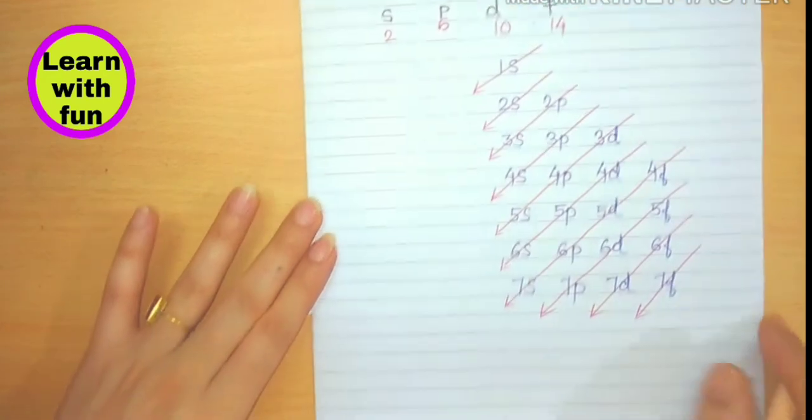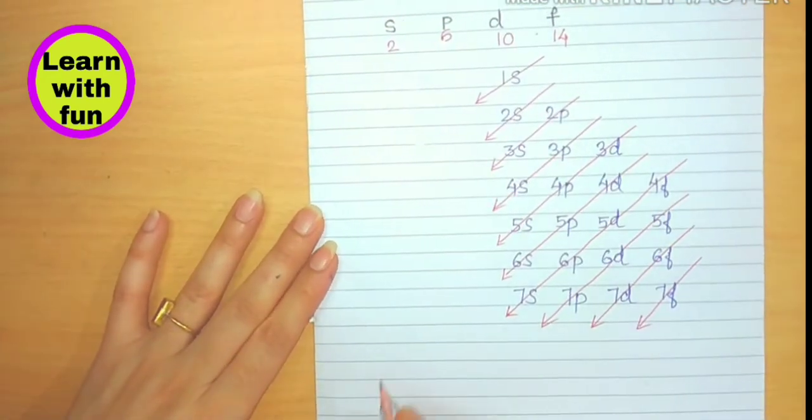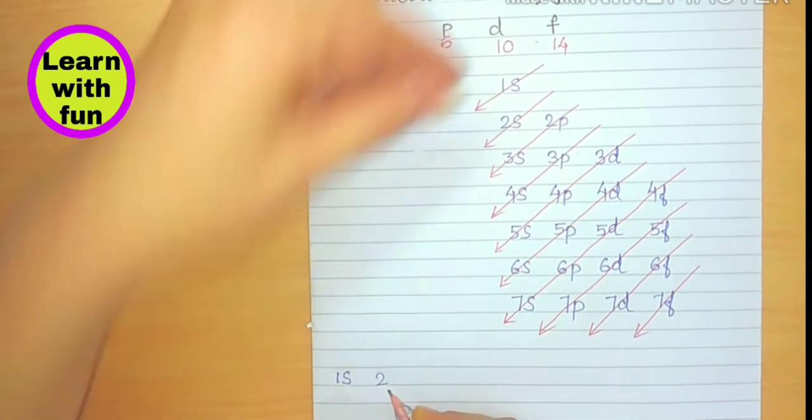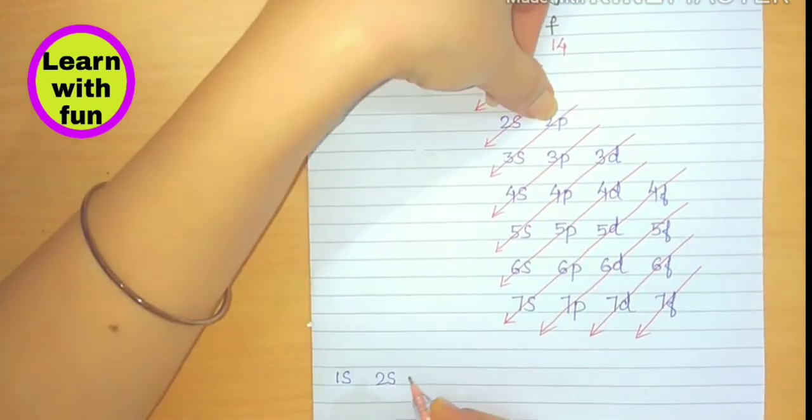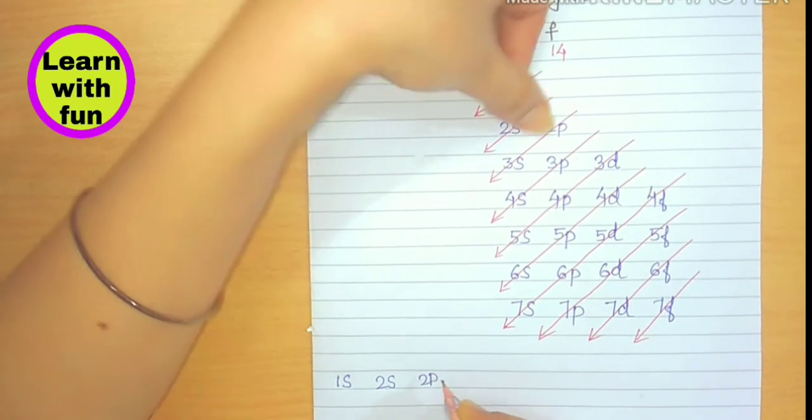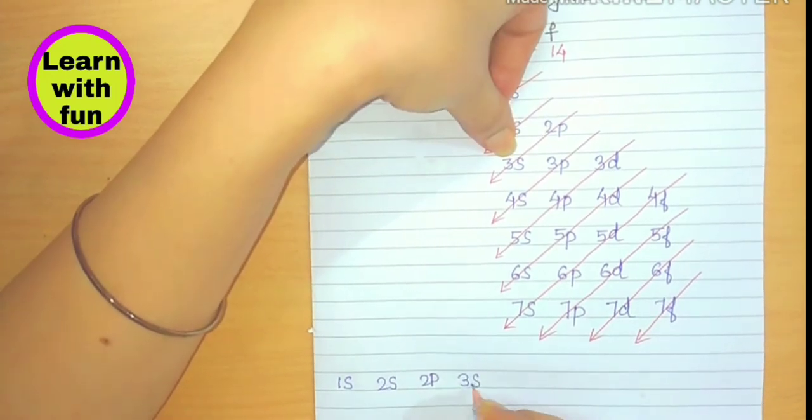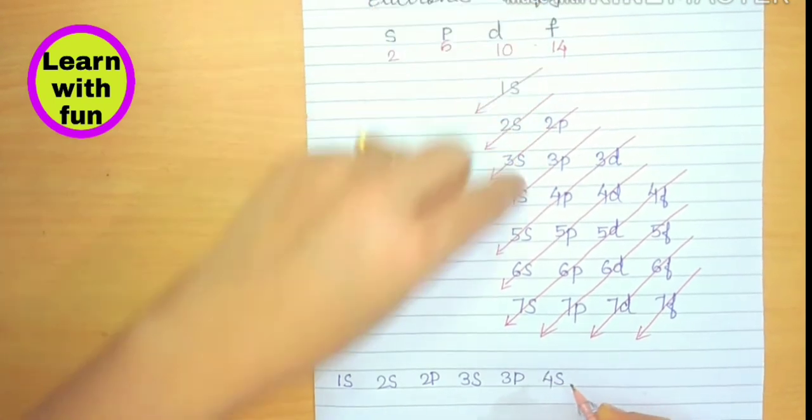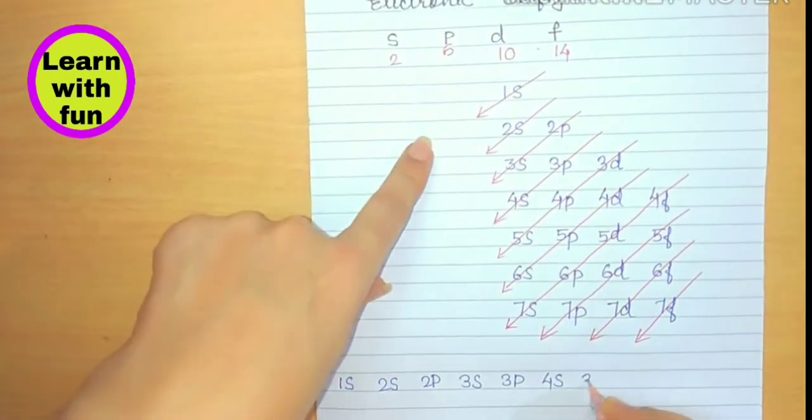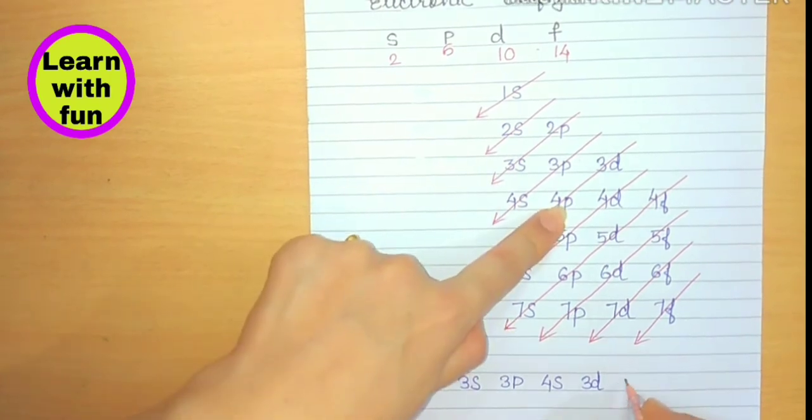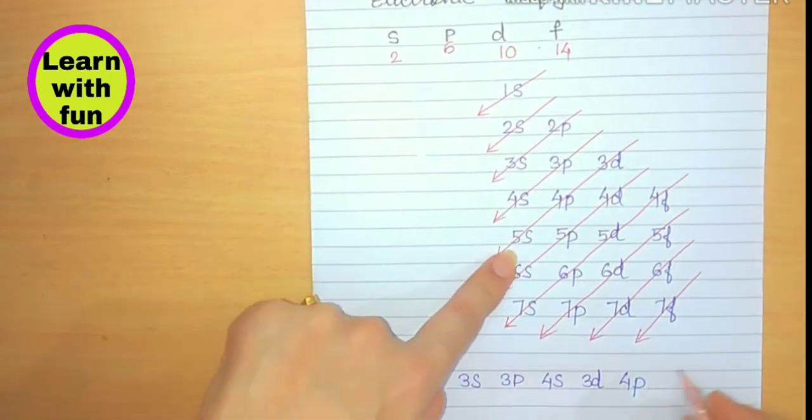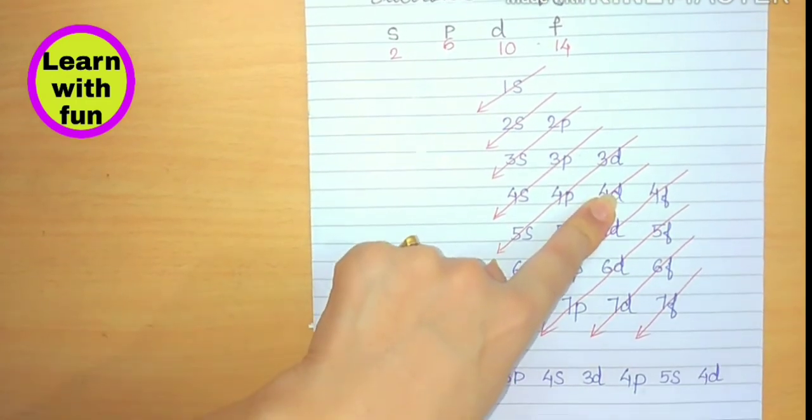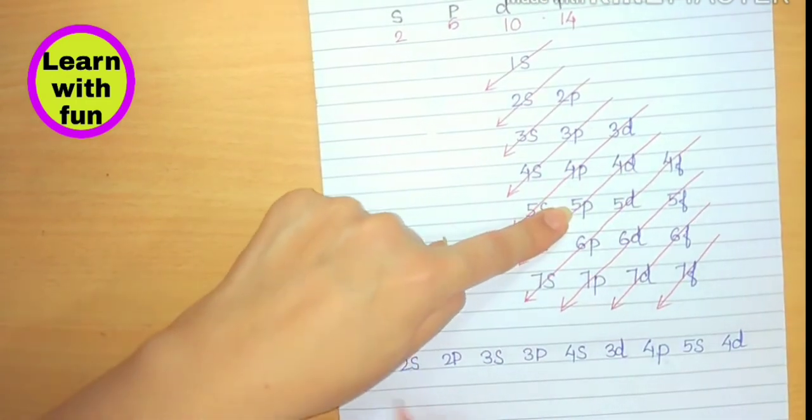Now let's write the electronic configuration: 1S, 2S, then 2P, 3S, 3P, 4S, 3D, 4P, 5S, 4D. We will move diagonally. 5P.